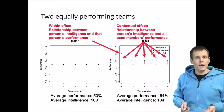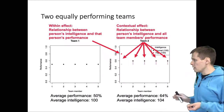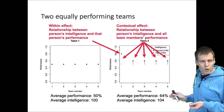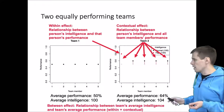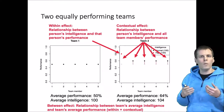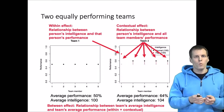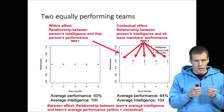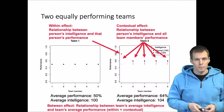The between effect is simply whatever is the difference in average performance on a team level as a function of average intelligence on a team level. So how much did the team performance increase when the average intelligence of a team increased — that is the between effect.